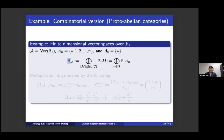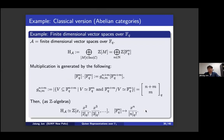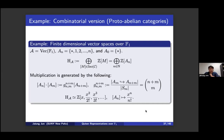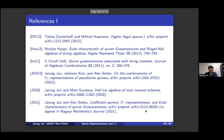In the proto-abelian case, for F1 vector spaces, any n-dimensional object is {0,1,...,n}. The Hall algebra is again spanned by isomorphism classes, and the counting — analogous to the Grassmannian case — gives exactly the binomial coefficient (n+m choose n). The isomorphism sends an n-dimensional F1 vector space to x^n/n!. Comparing the two formulas, the F1 vector space case is exactly the q=1 specialization. Thank you — those are the references.